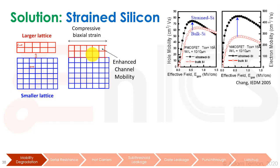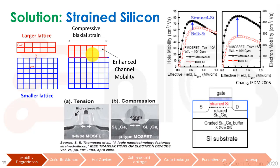When strain is applied, we get different mobilities, and it's worked very well — much better for PMOSs than NMOSs. For NMOSs we put tension, and for PMOSs we put compression, and there are different ways of engineering the channel to have more or less strain. It's been very successful to the point where nowadays PMOSs are the same speed as NMOSs, versus what we used to know where NMOSs were about three times as fast as PMOSs.